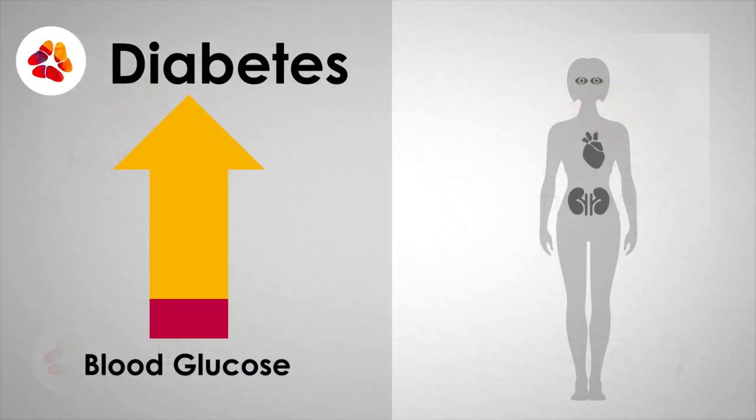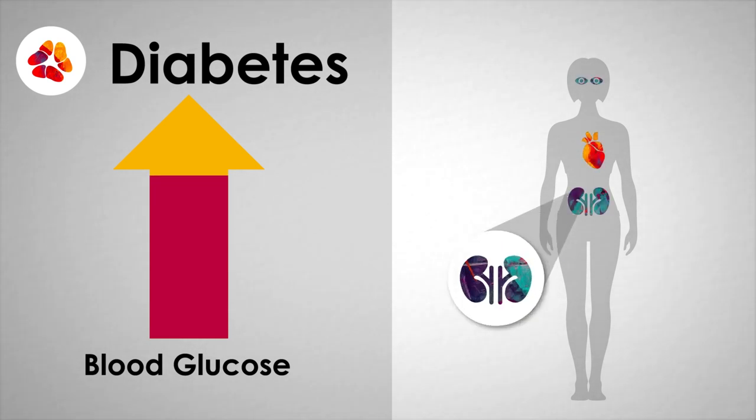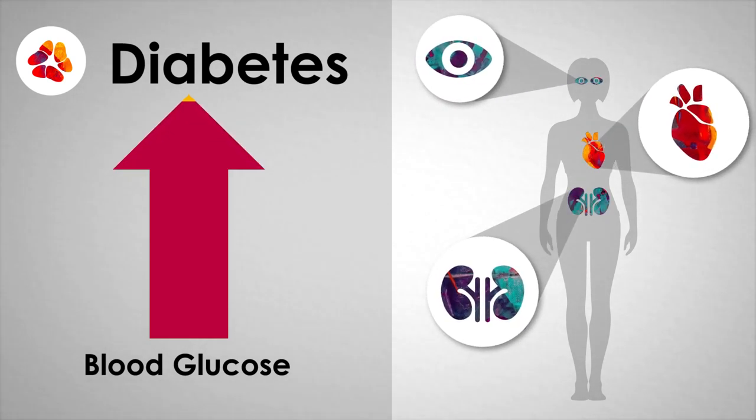Diabetes results in high blood sugar levels, which in turn can lead to serious complications including kidney, eye, and heart disease along with many other ailments.